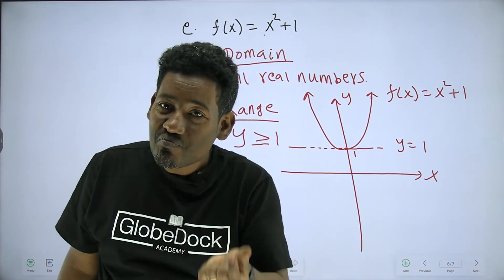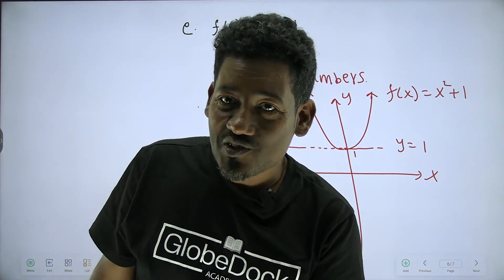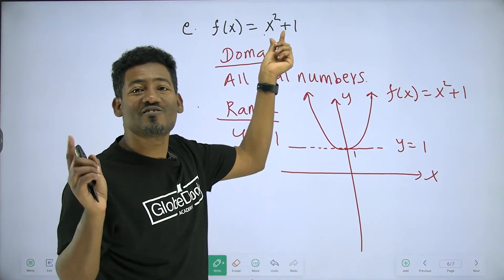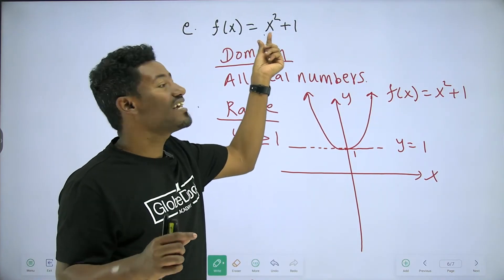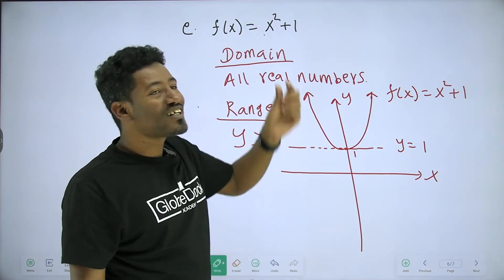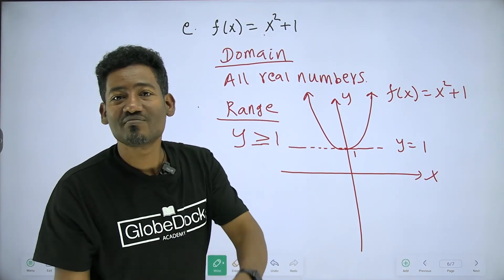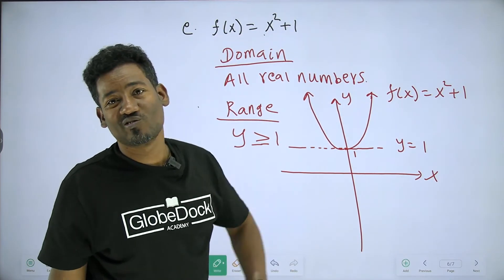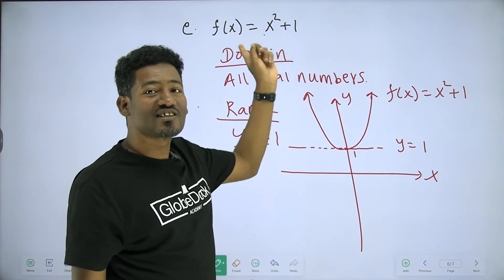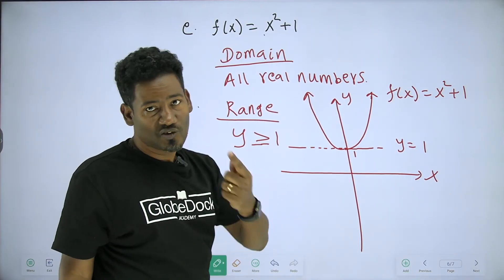x squared is always equal to or greater than zero. The minimum occurs because x can be positive or negative — when x equals zero, x squared equals zero, and that is the minimum.